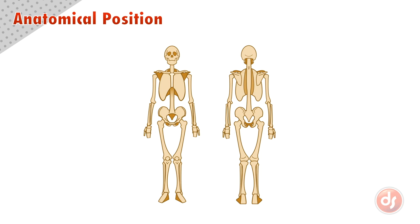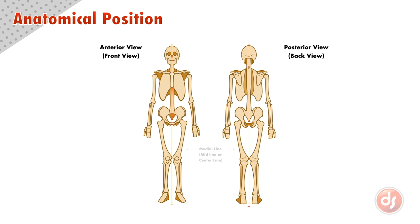The front is called the anterior view, and the back is the posterior view. There is a line running down the center of the body called the medial line, or midline or center line. This midline is considered the home of our body. If something is positioned away from the medial line, it is considered lateral.